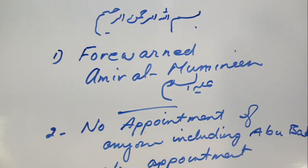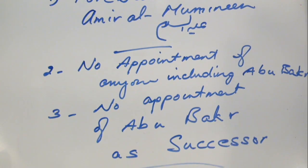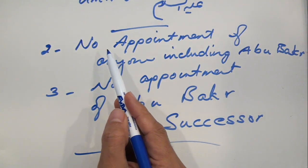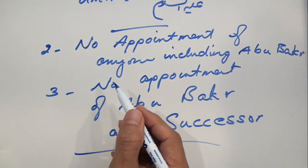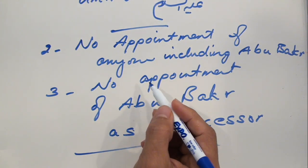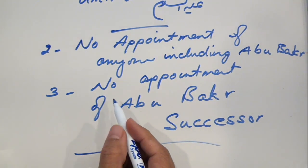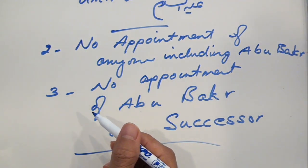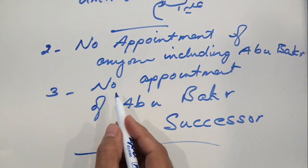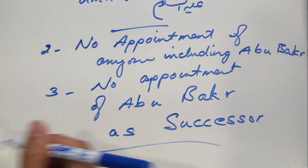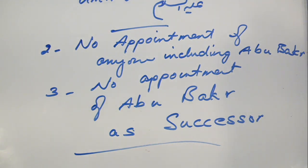No appointment of Abu Bakr specifically as Khalifa, as successor. So whether he led prayers or did not lead prayers, Abu Bakr was not appointed because the vast majority, even some of them have claimed consensus on this issue that they all agree, vast agreement that nobody was appointed. And especially with regard to Abu Bakr, Omar says so, Aisha says so, Abu Bakr himself says so, and very prominent and towering figures in Umari scholarship say so, that he was not appointed as successor of the Nabi sallallahu alayhi wa alihi wasallam.